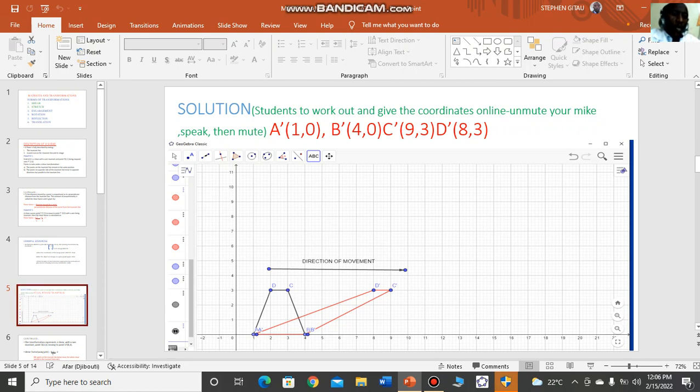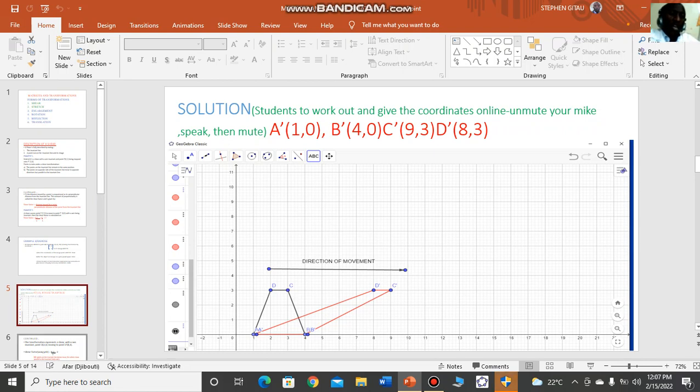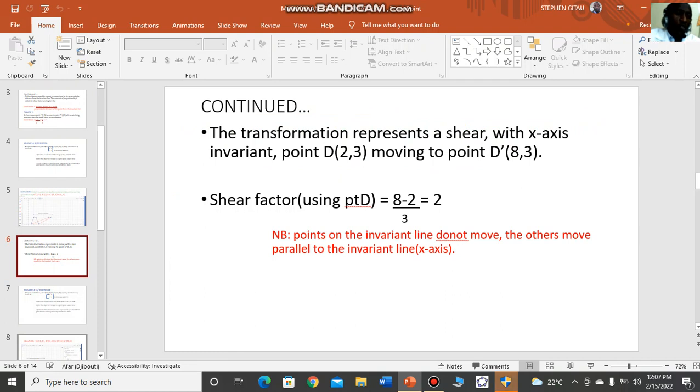If you look at the example, we see that point A has not moved. Point B has not moved since they are points on the invariant line. However, point D has moved to D', point C has moved to C'. This is the direction of movement, which is parallel to the invariant line. That is our answer: the transformation represents a shear with x-axis invariant, point D(2,3) moves to point D'(8,3). The shear factor, using point D, is 8 minus 2 divided by 3, which equals 2. Note that points on the invariant line do not move. The others move parallel to the invariant line.